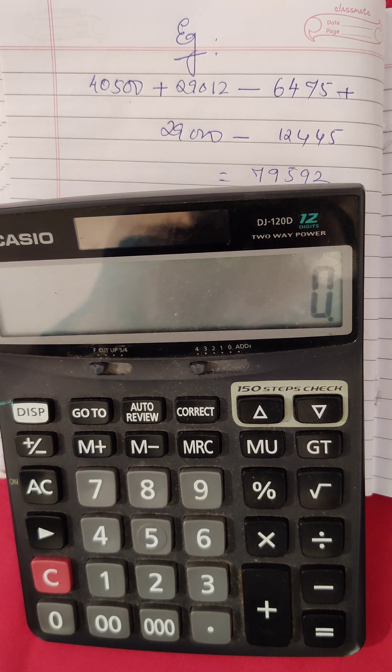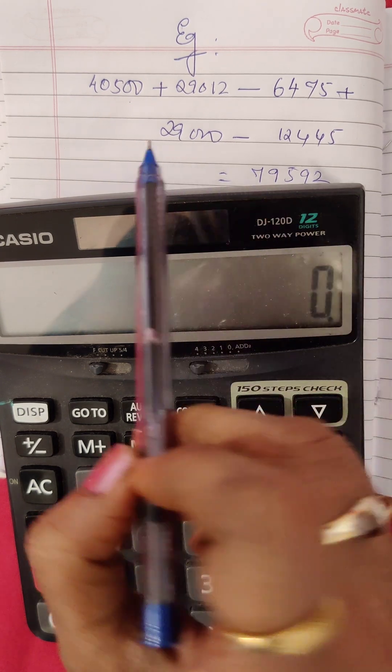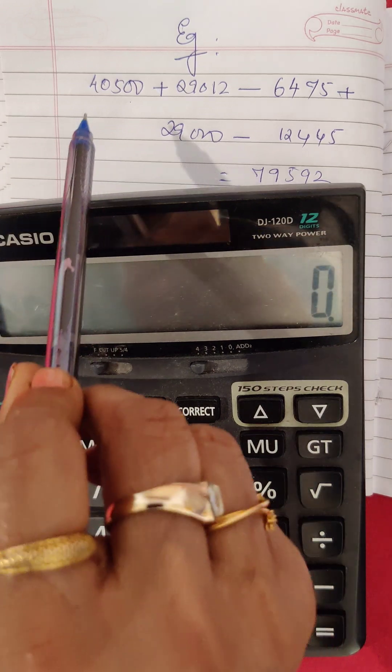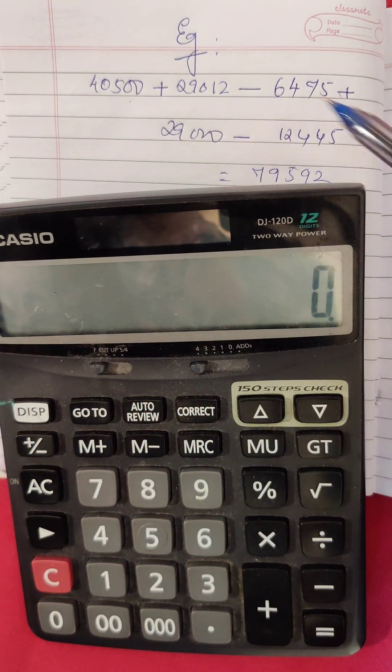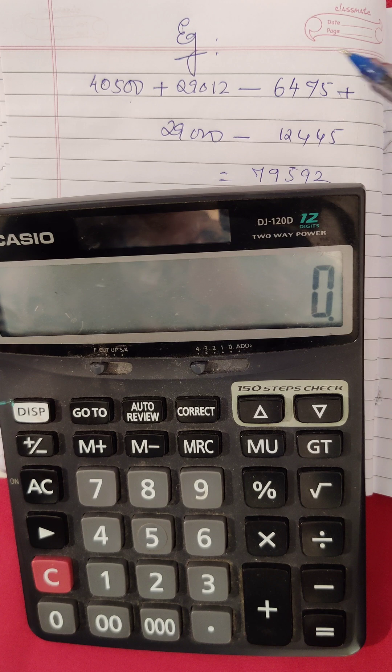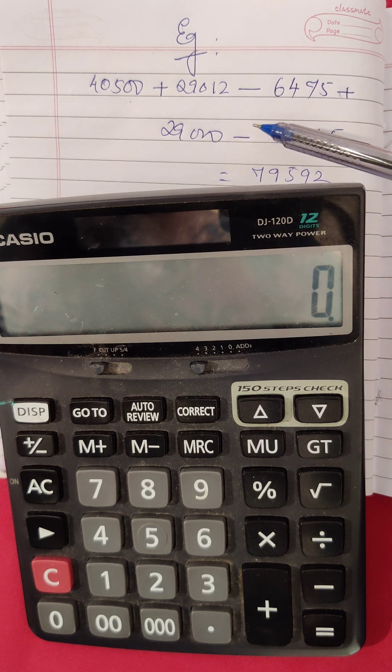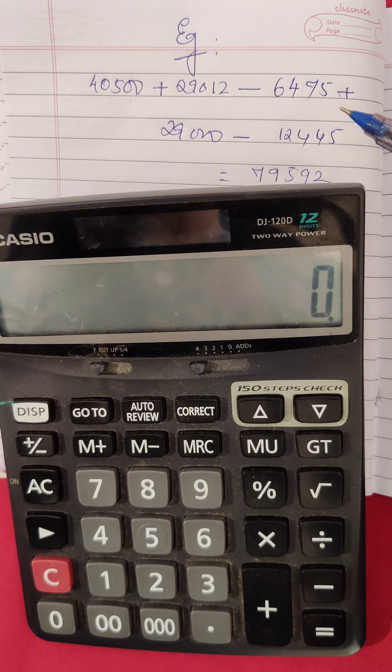Let's see how to do it with an example. I've written down some numbers here: 40,500 plus 29,012 minus 6,475 plus 29,000 minus 12,445.